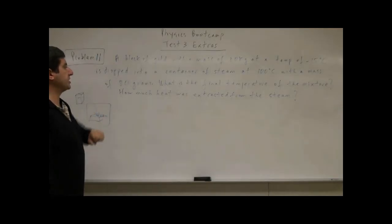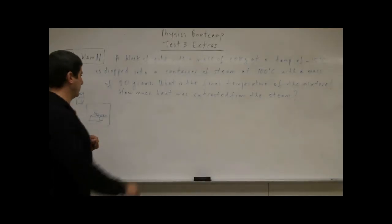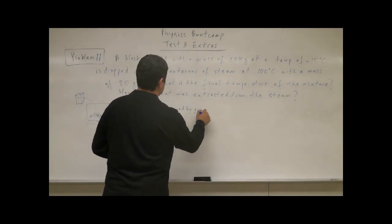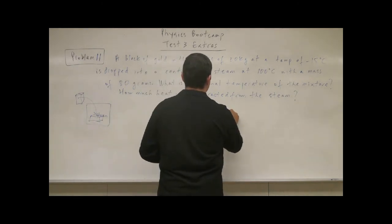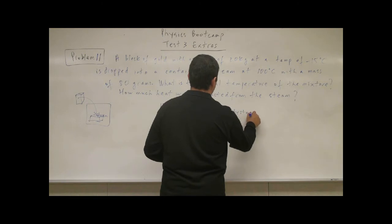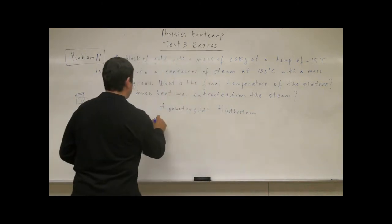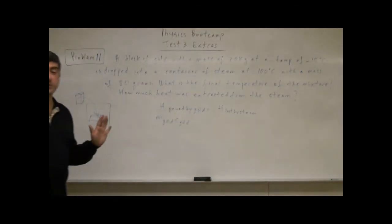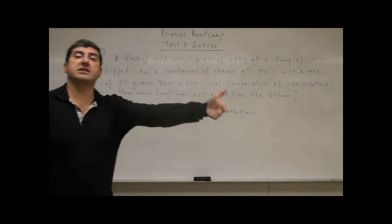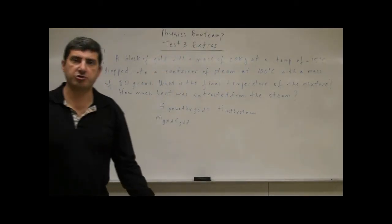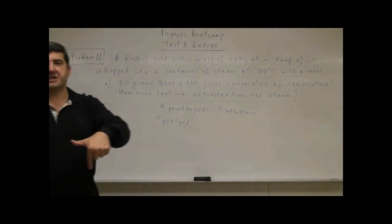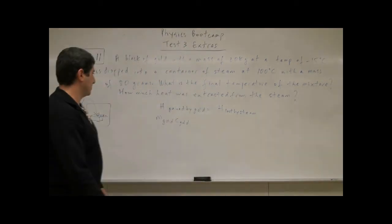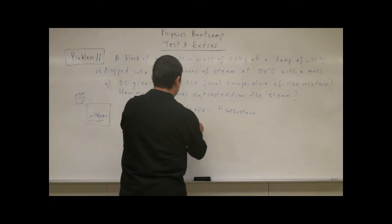So it says what is the final temperature of the mixture? How much heat was extracted from the steam? So again, we can say heat gained by gold is equal to heat lost by steam. Heat gained by gold: mass of gold, specific heat of gold. The gold in this case is going to experience no change of phase. It's the object that is cooling that is experiencing the change of phase, whereas in the previous example, the object that was warming was experiencing the change of phase. So you have mass of gold, specific heat of gold, times delta T of gold.